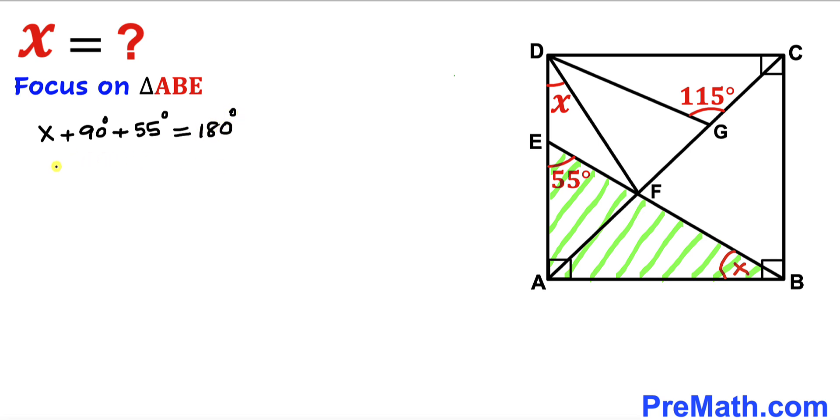Now let's subtract 145 degrees from both sides to isolate x. This cancels out, so our angle x turns out to be 35 degrees.